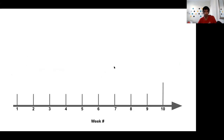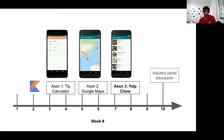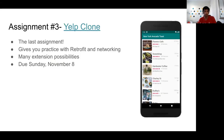Let me show you the map one more time of where we are. Right now we're in week seven. Week nine is going to be all the things we haven't talked about — things like React Native, Flutter, or more advanced Android concepts. The last lecture is an industry panel. Now in week seven, all of you are done with two out of three projects. The third assignment is the Yelp clone, and it's now live — you should be able to see it in Canvas.